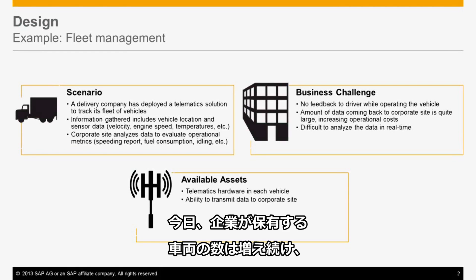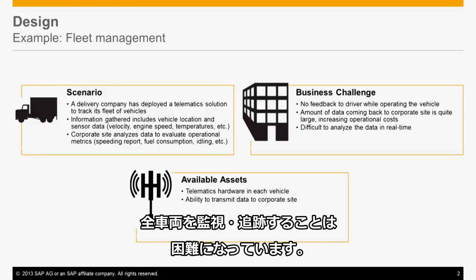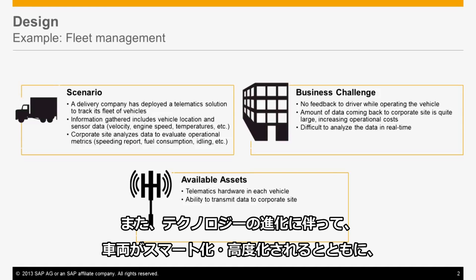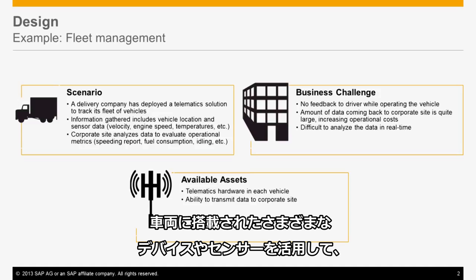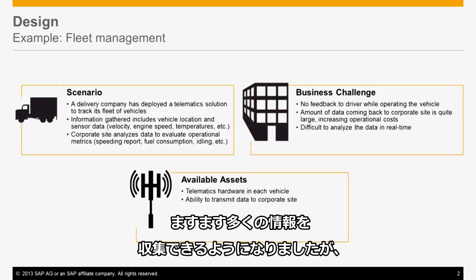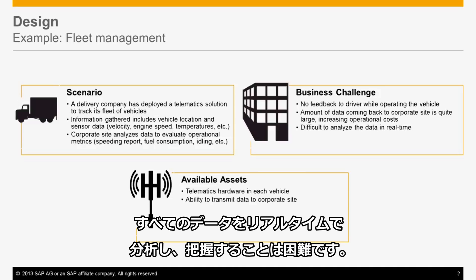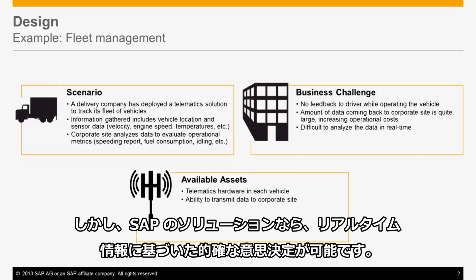Transportation fleets within companies today have a growing number of motor vehicles, making it hard to monitor and track each and every one of them. Vehicles have also changed over the years as technology has improved, leading to smarter, more advanced vehicles and innovations in telematics. We are able to capture more and more information about vehicles using the various devices and sensors on board. The problem with all this data is that it is hard to analyze and make sense of it all in real-time. Our solution allows the driver and the company to make informed decisions based on real-time information retrieved.